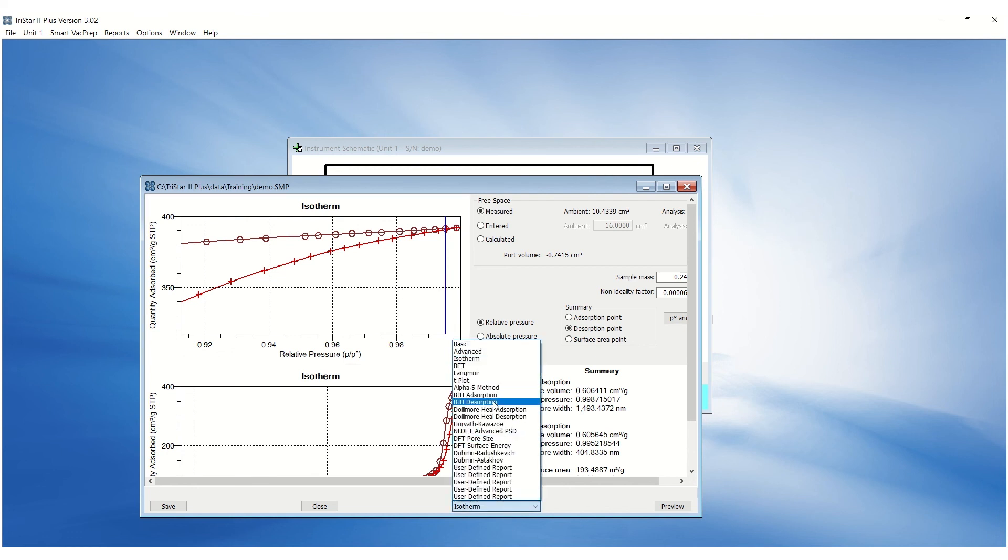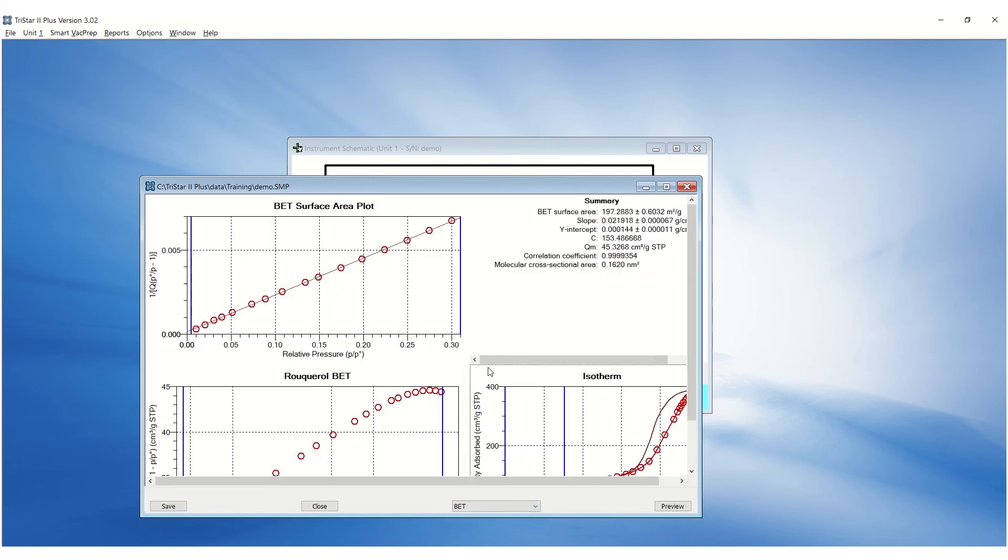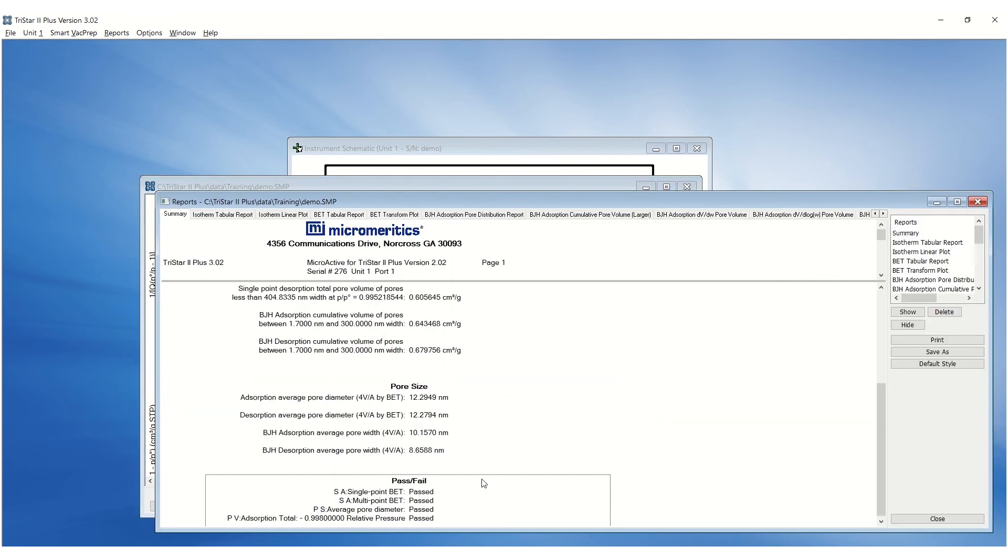Click on the drop-down menu below and select BET. Ensure the correct relative pressure range is selected to calculate BET surface area. Click Preview to view the result. The Summary page lists whether the results passed or failed the entered specifications.